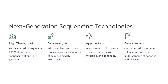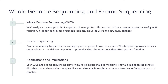Whole genome sequencing (WGS) analyzes the complete DNA sequence of an organism, providing a comprehensive view of genetic variation. WGS identifies all types of genetic variants, including single nucleotide polymorphisms (SNPs) and structural changes. Exome sequencing focuses on the coding regions of genes, known as exomes, reducing sequencing costs and data complexity, and primarily identifies mutations that affect protein function. Both WGS and exome sequencing play critical roles in personalized medicine, aiding in diagnosing genetic disorders and understanding complex diseases. These technologies are continuously evolving, refining our understanding of genetics.